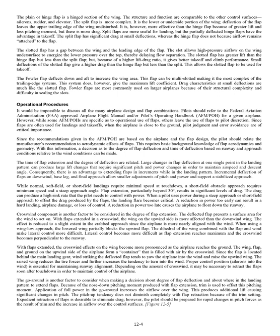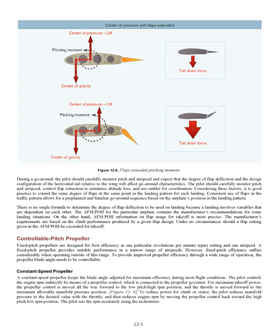The go-around is another factor to consider when deciding on degree of flap deflection and where in the landing pattern to extend flaps. Because of the nose-down pitching moment produced with flap extension, trim is used to offset this pitching moment. Application of full power in the go-around increases the airflow over the wing, producing additional lift and causing significant changes in pitch. The pitch-up tendency does not diminish completely with flap retraction because of the trim setting. Expedient retraction of flaps is desirable to eliminate drag; however, the pilot should be prepared for rapid changes in pitch forces. During a go-around, carefully monitor pitch and airspeed, control flap retraction to minimize altitude loss, and use rudder for coordination.